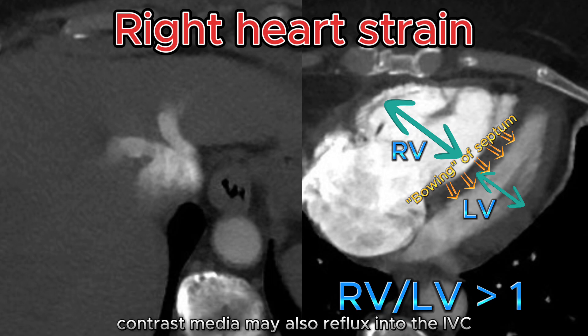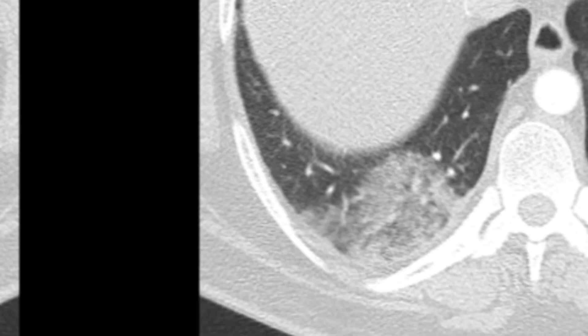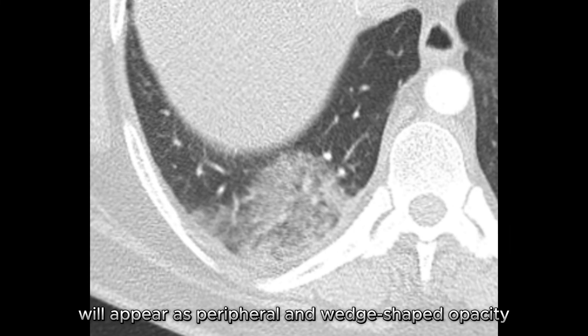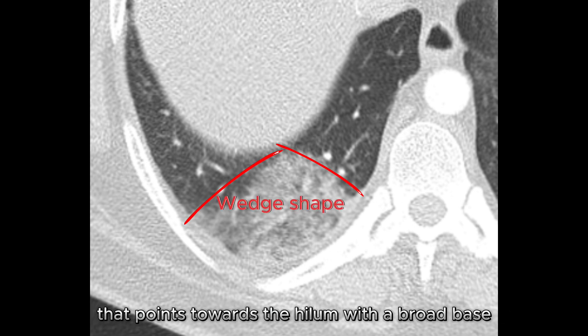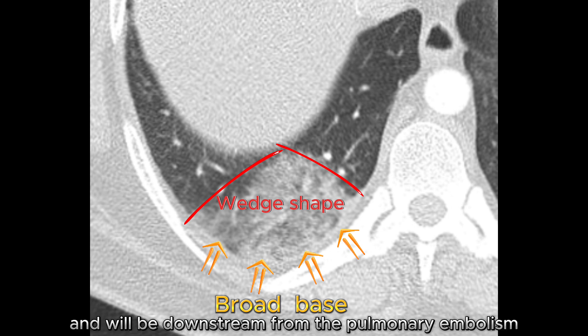Contrast media may also reflux into the IVC and hepatic veins. A pulmonary infarct will appear as a peripheral, wedge-shaped opacity that points towards the hilum with a broad base. This is commonly seen in the lower lobes and will be downstream from the pulmonary embolism.